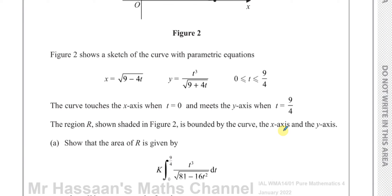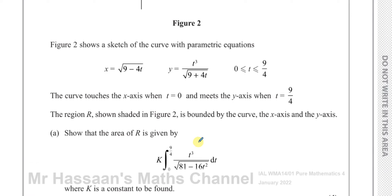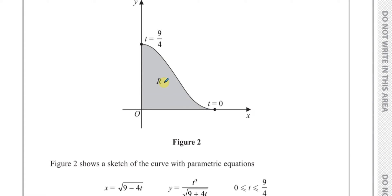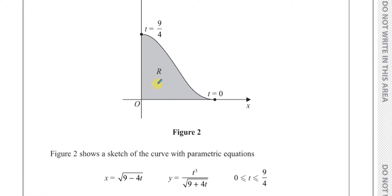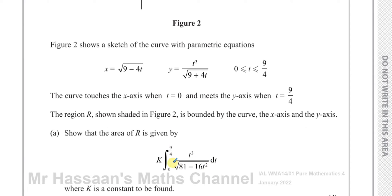For Part A, we have to show that if we are going to find this area using parametric equations, we should end up with an integral like this in terms of t, which then in Part B we have to actually integrate. So we have to show how to find the area under this curve and show that this is the integral we should reach, all in terms of t.